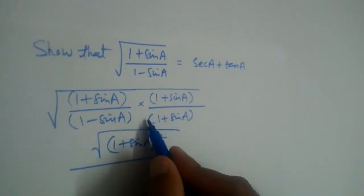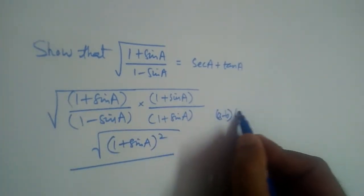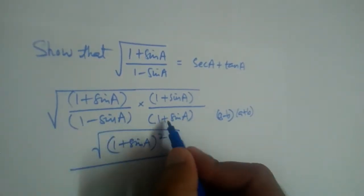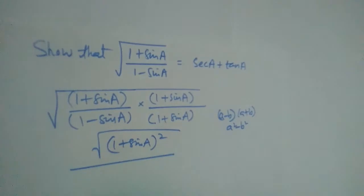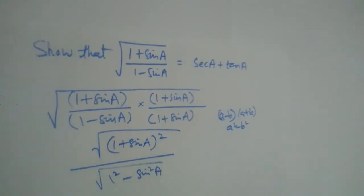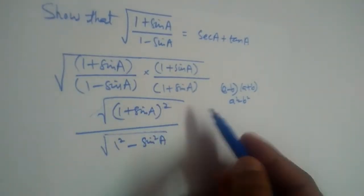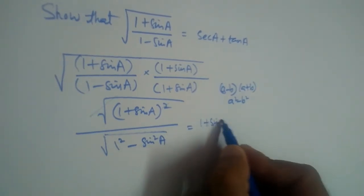In the denominator, (1 - sinA) multiplied by (1 + sinA) is of the form (a - b)(a + b), which equals a² - b². So this becomes 1² - sin²A. The square and the root in the numerator cancel, giving us (1 + sinA) on top.